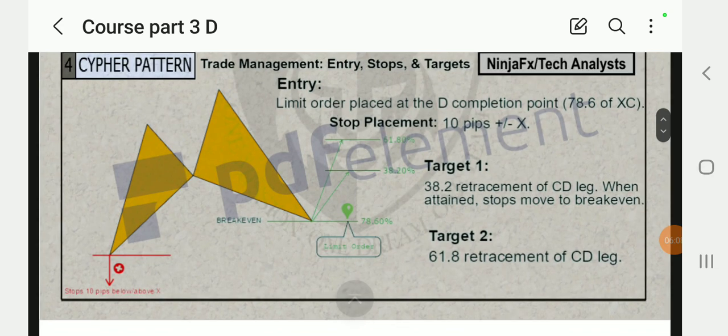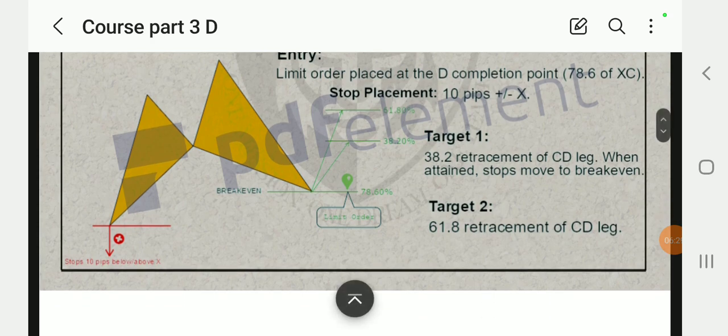The limit order is a buy limit. Then your target would be 38.2 retracement of CD leg. When attained, stops move to break even. So stop loss, you move it from the red side, from the losses side, to the profit side. To break even means stop loss and profit. 61.8 retracement of CD leg is target 2. So your target one is 38.2, target 2 is 61.8.